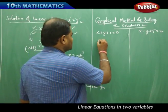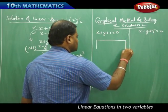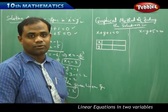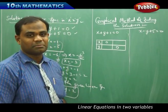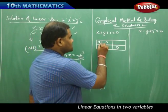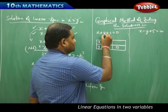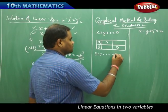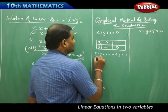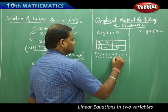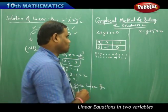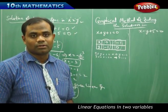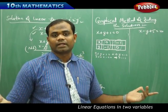Let's draw the line for the first equation by making a table of x and y values. Setting x equal to 0: 0 plus y plus 1 equals 0, giving y equals minus 1. Setting y equal to 0: x plus 0 plus 1 equals 0, giving x equals minus 1. So the two points for this line are (0, minus 1) and (minus 1, 0), which when plotted and joined with a ruler give a straight line.